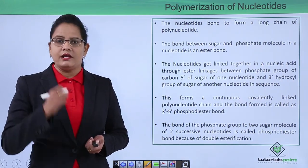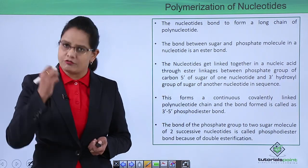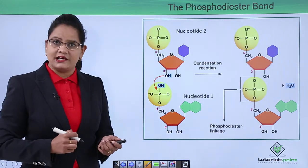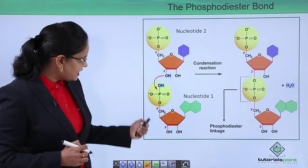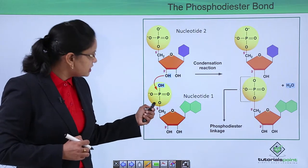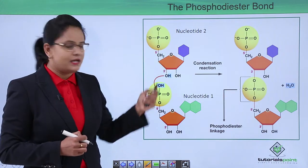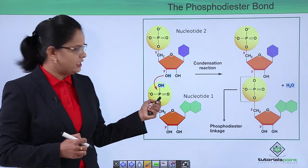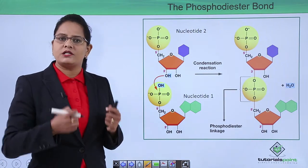When two nucleotides join together, the bond is again an ester bond. The three prime hydroxyl group joins with the five prime phosphate of one nucleotide. As you can see clearly in the diagram, the incoming nucleotide has a phosphate group at the five prime carbon, which joins with the three prime hydroxyl of the other nucleotide. A condensation reaction occurs, as all biopolymers are formed by condensation reaction and dehydration synthesis.